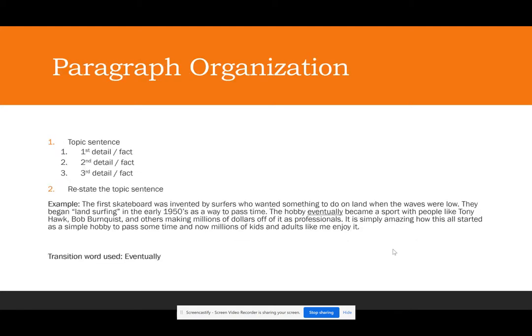That leads us to paragraph organization. Our writing must have information in paragraphs. I didn't put a limit on the number of paragraphs, and I'm not going to tell you what information to include — I'm just going to explain the paragraph structure. We always start with a topic sentence that tells the reader what information we're about to cover in this paragraph. We don't need to explicitly say 'in this paragraph I am going to cover' — we just need to start with a clear topic, then stay on topic for the next three to four sentences.